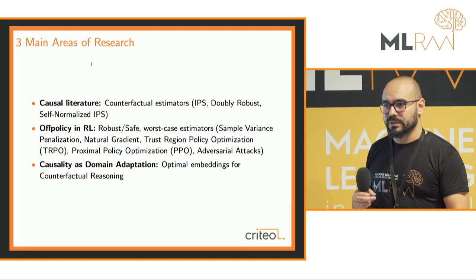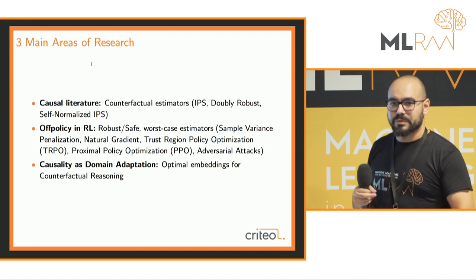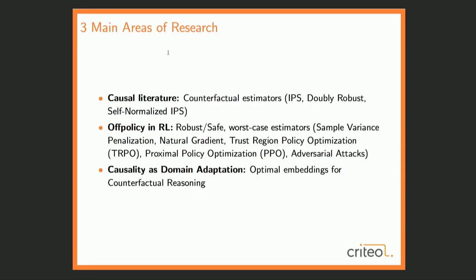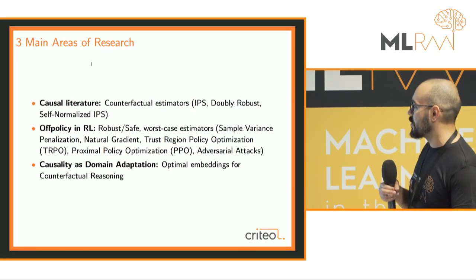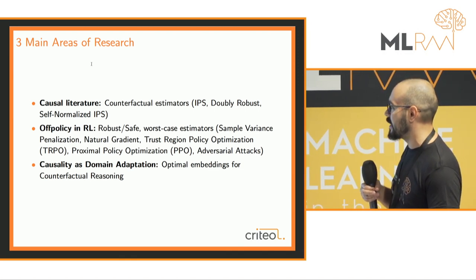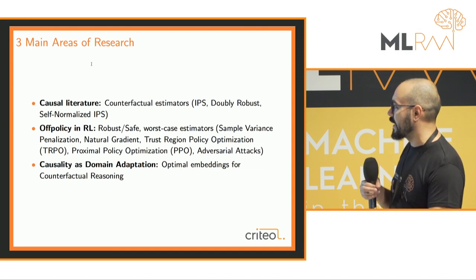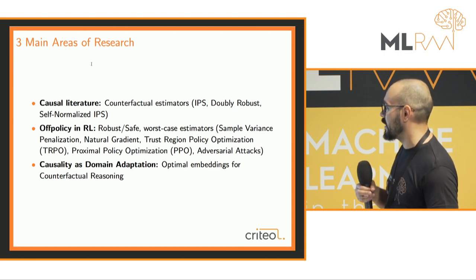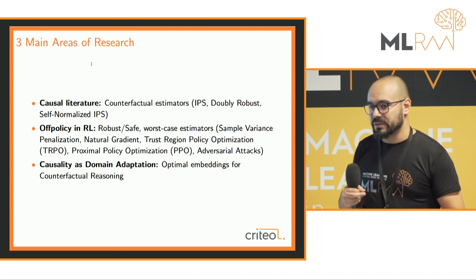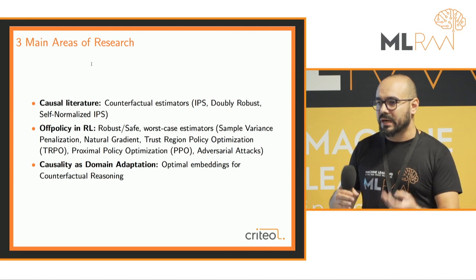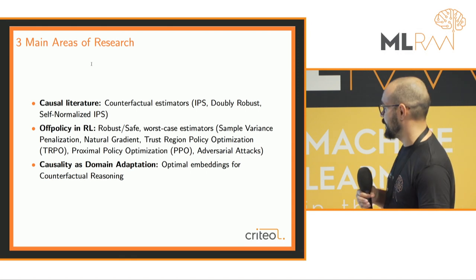Randomized data is sparse and scarce — you can't use too much of it because it costs money — so people try to use observational data. There are three schools of thought. First: counterfactual estimators — IPS (totally unbiased but high variance), doubly robust, self-normalized IPS, and the MAGIC estimator. Second: off-policy RL work with safe estimators like worst-case bounds. Third — less known but most promising — thinking about causality as domain adaptation: finding an embedding space for users and arms that bounds the variance between doing and not doing something.